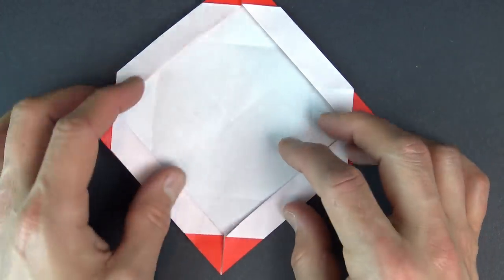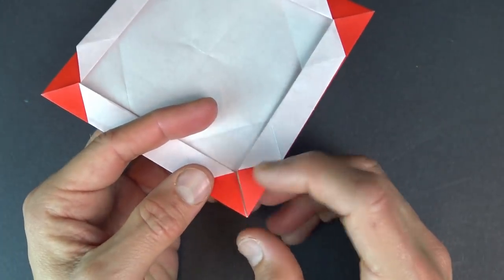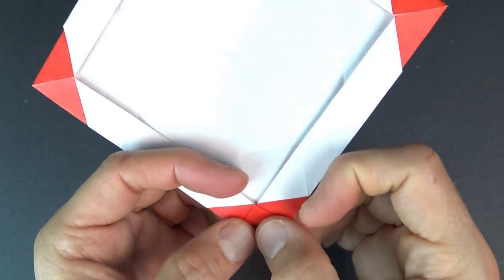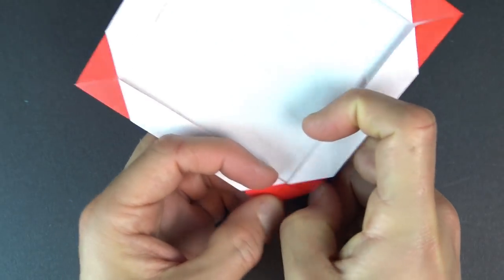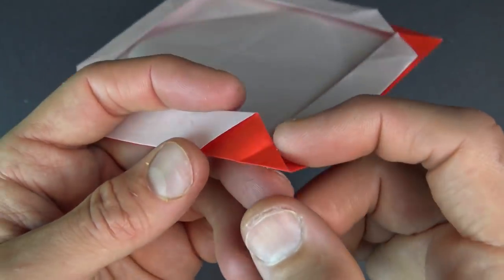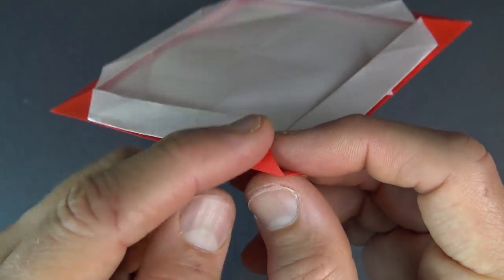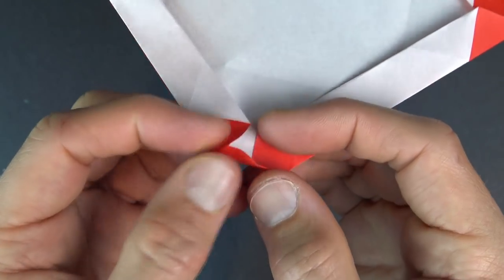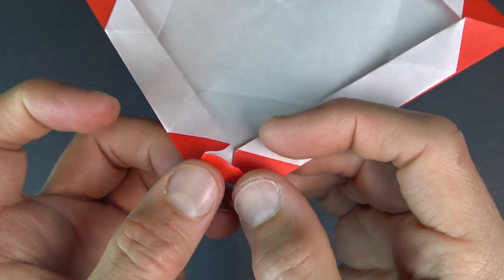Okay. Now, fold this corner to there. And unfold. And now, lift this flap up, and you see that crease? Pinch on that crease. So, it's like that. And flatten.